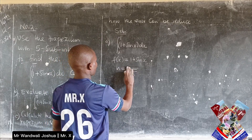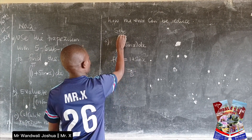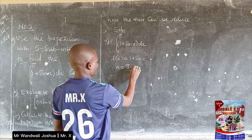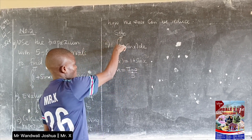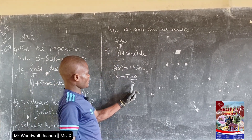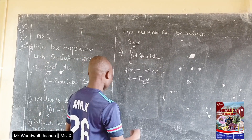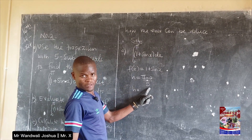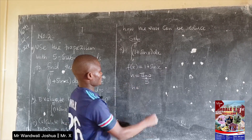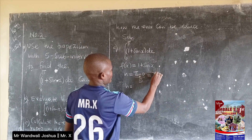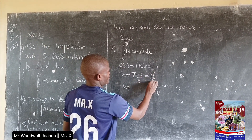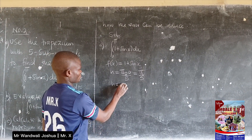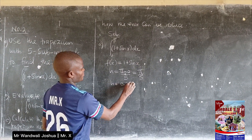The upper limit is π, not 1, so h = (π − 0) / 5 = π/5. Now π/5 can be written as 0.2π, since 1/5 = 0.2. So our height h is 0.2π.